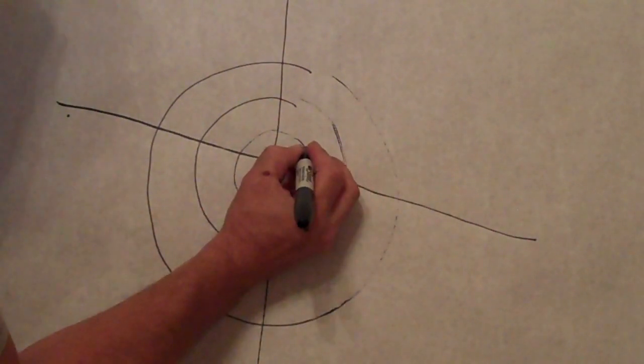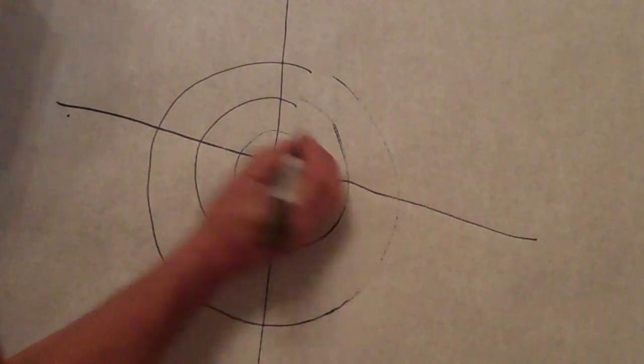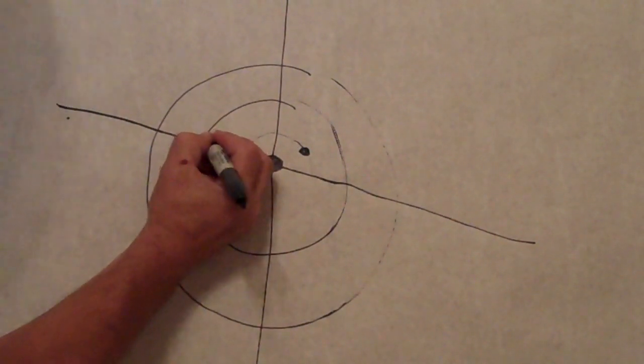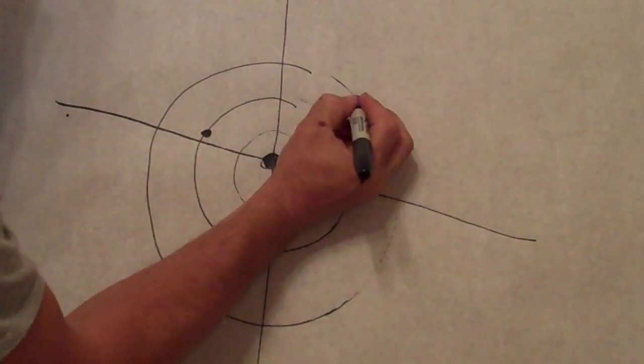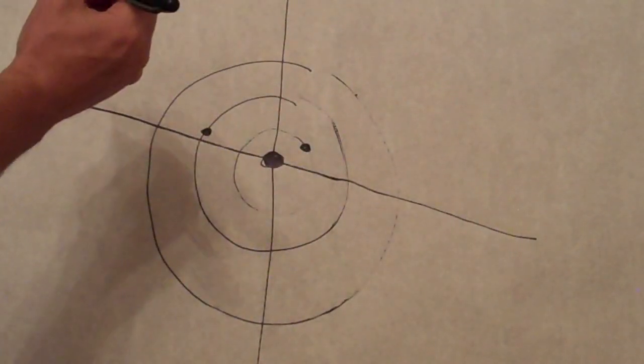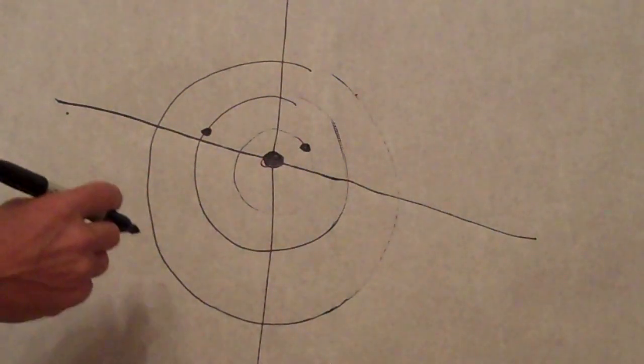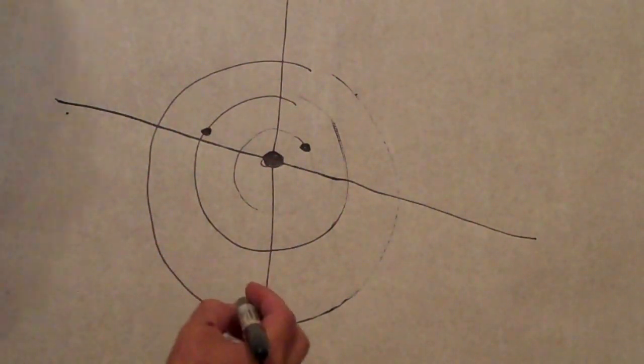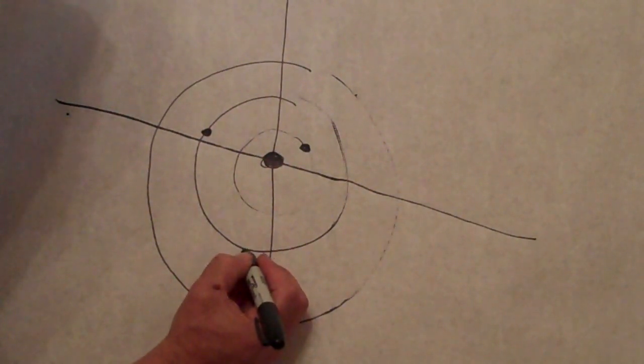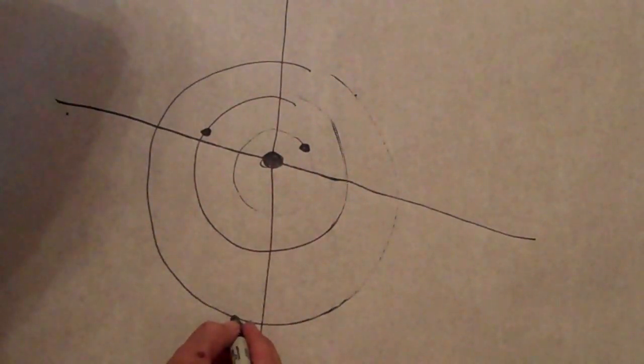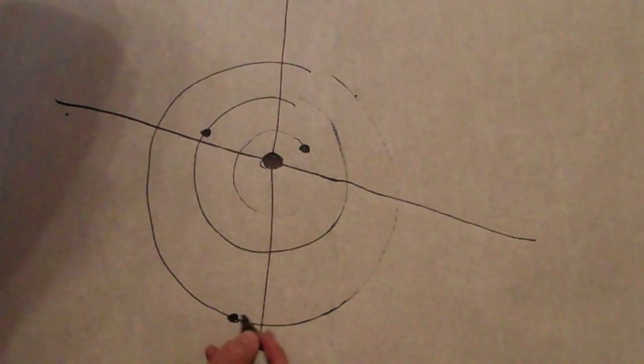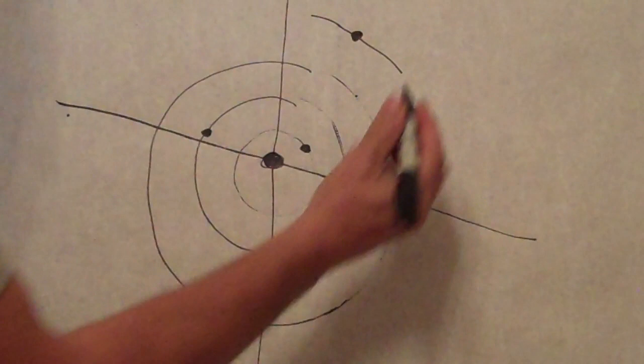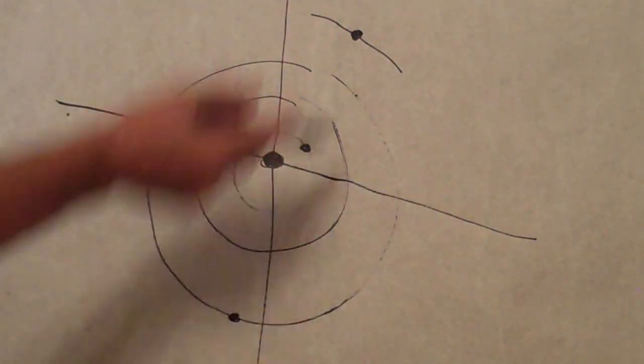So we've got Mercury, Venus, Mars... 1, 2, 3... Earth, 1, 2, 3... Earth is 1, 2, 3... Earth is over here. And then Mars is out over here. We have four: Mercury, Venus, Earth, and Mars.